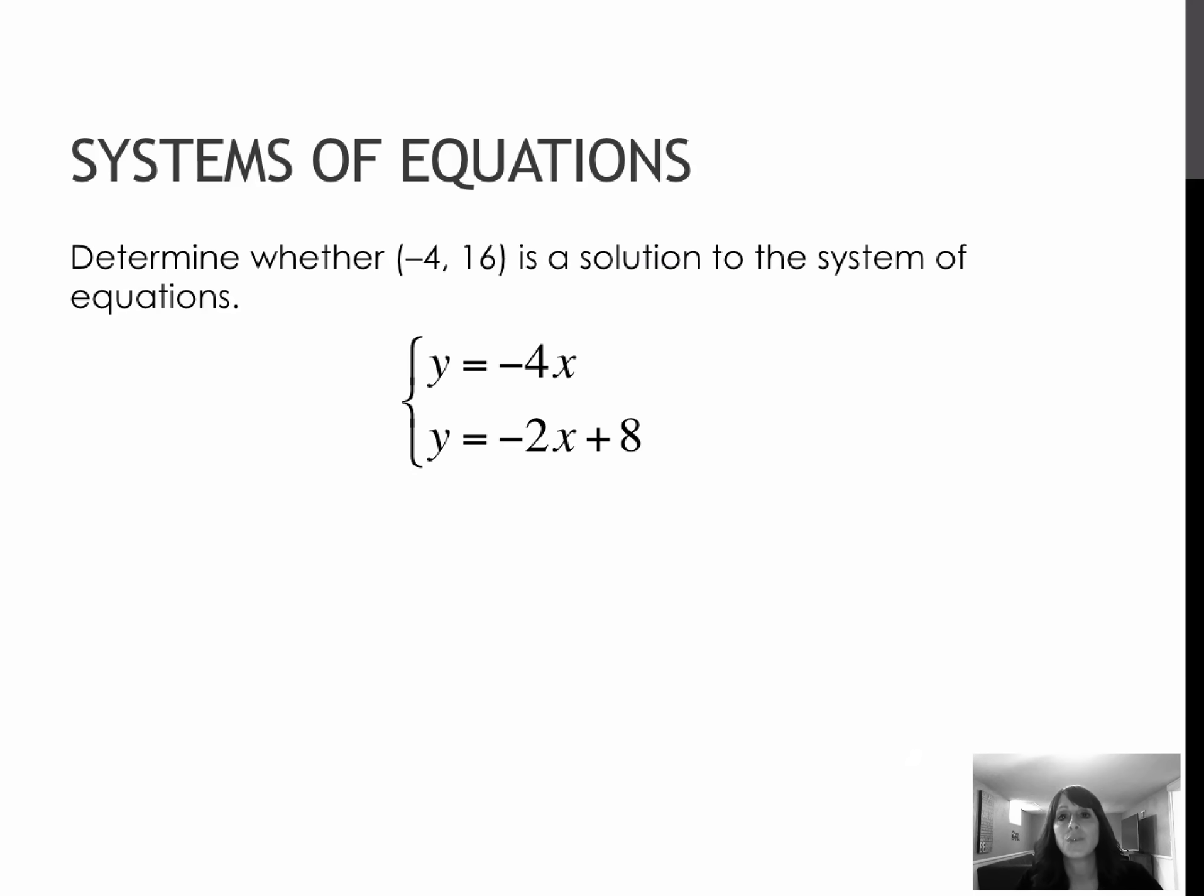So for this first lesson, we're really going to focus on whether or not something is a solution to a system. To do that, we need to determine, does the point they give us fall on each of the two or three or however many lines they give us? So for my first one, they gave me a point of (-4, 16). And what they're saying is, if I graphed these, would they in fact cross at (-4, 16), or would (-4, 16) be a solution to both equations? To find out, I'm going to replace y with 16 and x with -4, and then I'm going to solve and see, do they in fact equal each other?